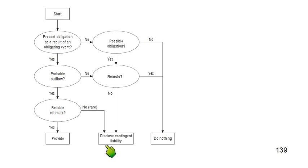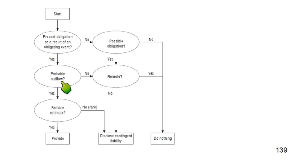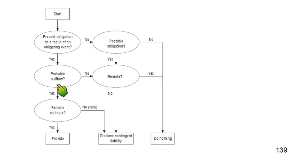Continuing the flowchart: if there is a present obligation but no probable outflow (less than 50% chance), we then ask whether the chance is remote — around 5 to 10 percent. If it is not remote — meaning the chance is between 10% and 50% — we disclose it as a contingent liability. If the chance is truly remote, we do nothing.